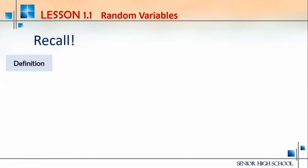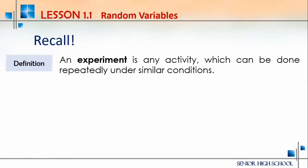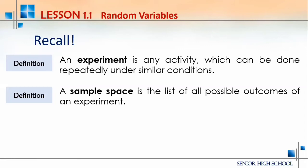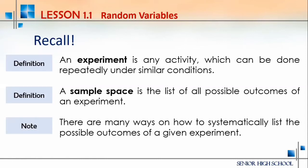Let's recall another definition. An experiment is any activity which can be done repeatedly under similar conditions. A sample space is the list of all possible outcomes of an experiment. For instance, if we toss a coin once, the possible outcomes are head or tail — that is an example of a sample space. There are many ways to systematically list the possible outcomes of a given experiment.